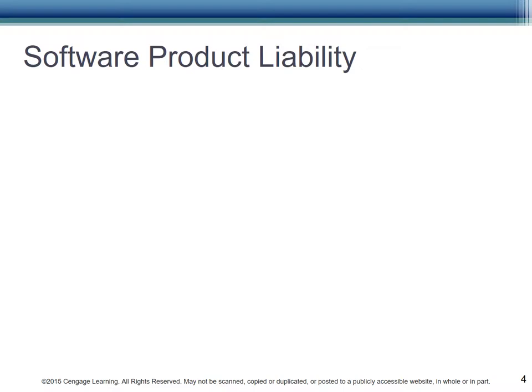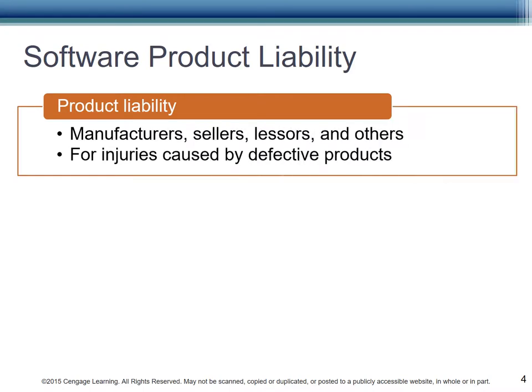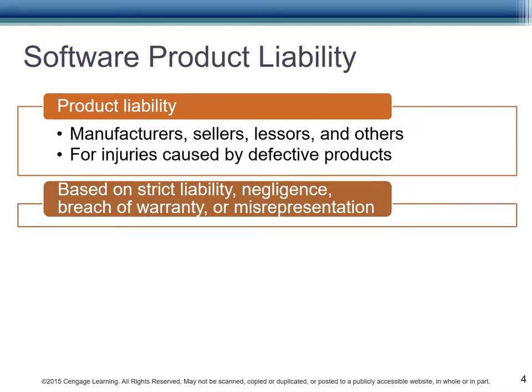Software product liability may be costly, depending on the products made. Product liability extends throughout the supply chain, from manufacturers or developers to sellers and retailers. If an injury is caused by a defective product, everyone in the supply chain is liable. People may be sued based on strict liability, negligence, breach of warranty, and/or misrepresentation.